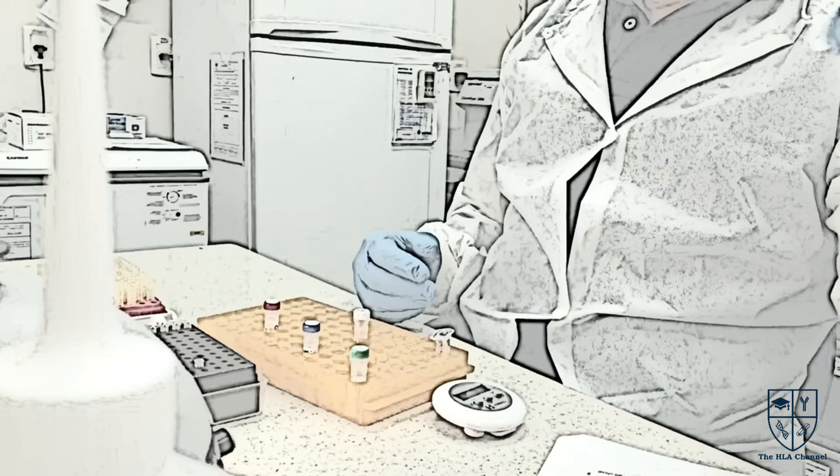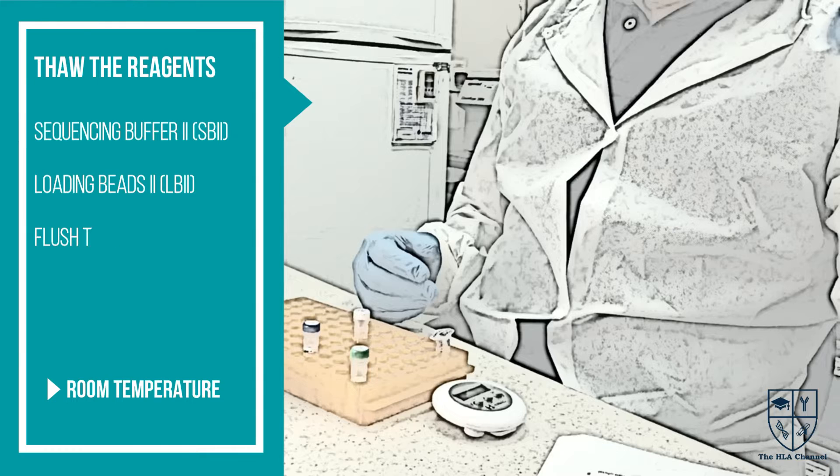To prepare the priming mix, you should thaw the following reagents: Sequencing Buffer 2 (SB2), Loading Beads 2 (LB2), Flush Tether (FLT), and Flush Buffer (FB).